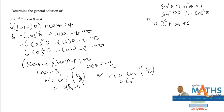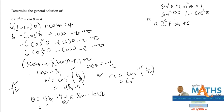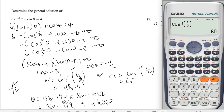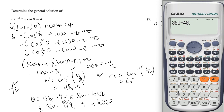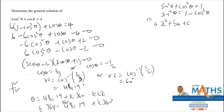Cos is positive on the first and fourth quadrants. So θ = 48.19° + k·360° or, on the fourth quadrant, θ = 360° - 48.19° + k·360°, which gives θ = 311.81° + k·360°, where k is an element of integers.